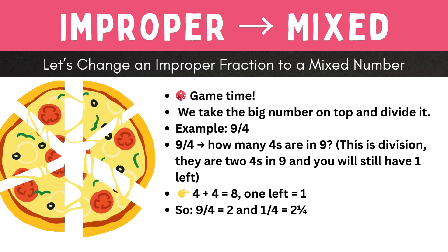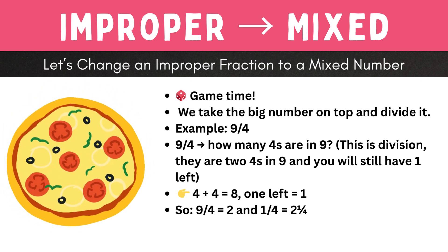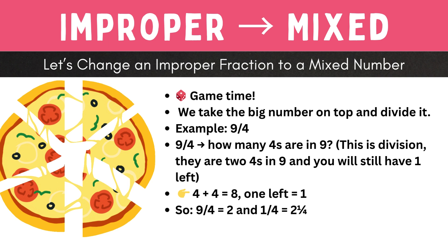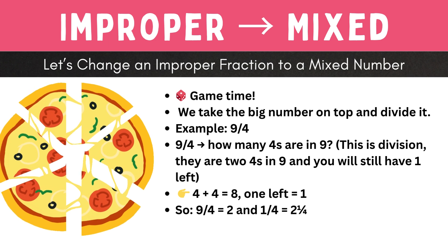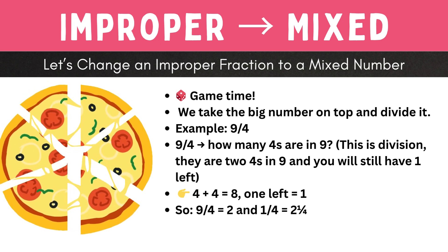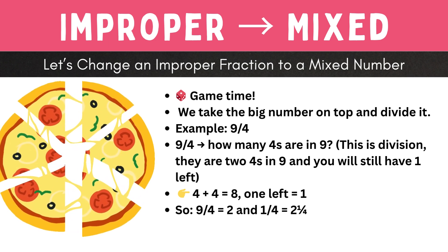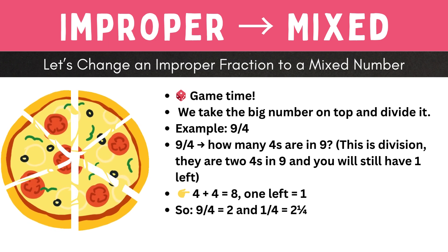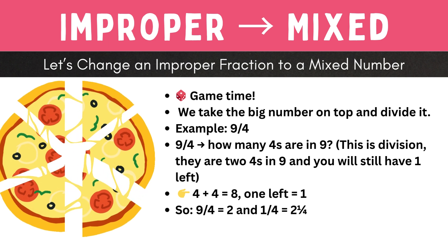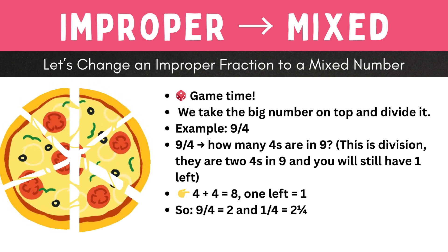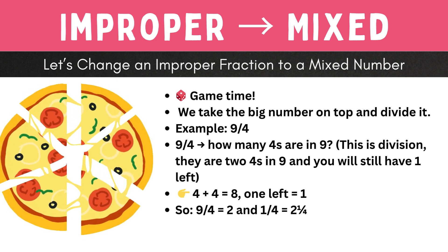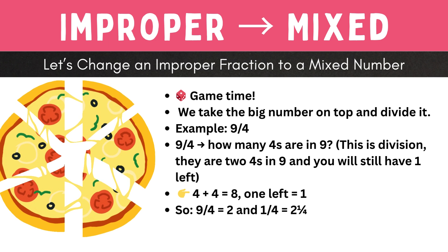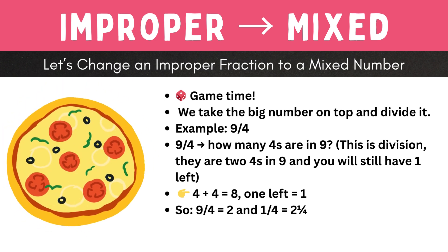The magic trick: changing fractions from improper to mixed. Big Mommy wants to show you a magic trick. Let's turn nine fourths into a mixed number. How many fours are in nine? Debbie, count it: four plus four equals eight — that's two fours with one left over. So nine quarters equals two and one quarter. And yes, it's the same as saying you ate two full cakes and one quarter!